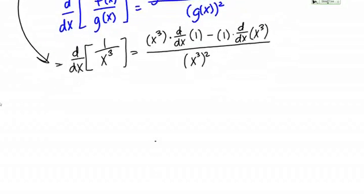So let's work out that numerator. So we have x cubed, now the derivative of 1 with respect to x is 0, minus 1 times the derivative with respect to x of x cubed. So now on that we can use the power rule. We have a positive integer exponent, so that's going to become 3x squared.